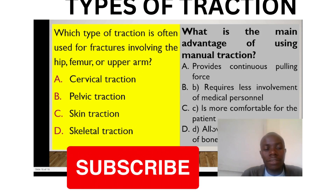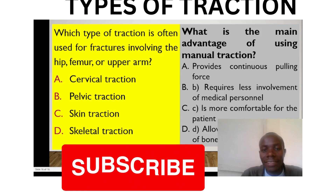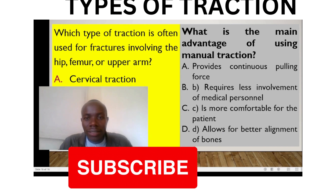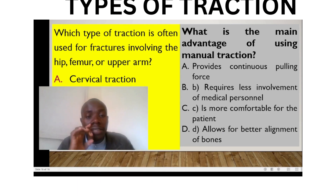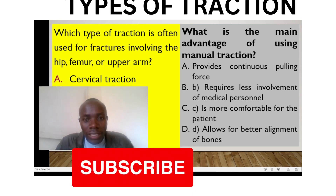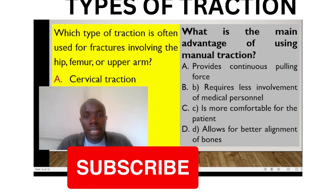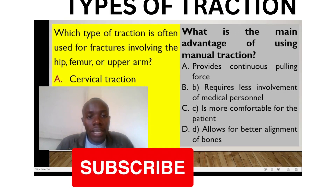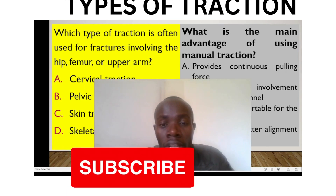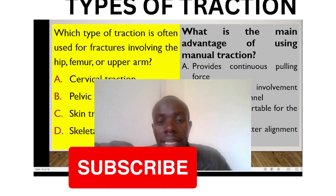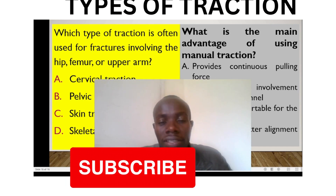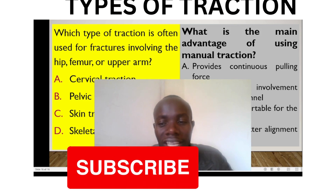What is the main advantage of using manual traction? It is more comfortable for the patient than the other forms. Remember, manual traction is normally done in the field, but it is important to confirm the patient doesn't have a fracture before performing it. Before you do traction, you have to calculate the traction weight. In calculating traction weight, you take 10% of the patient's body weight. Thank you so much, guys.